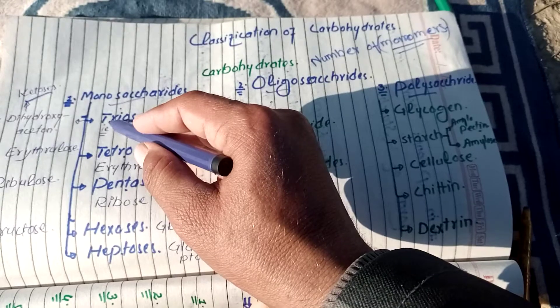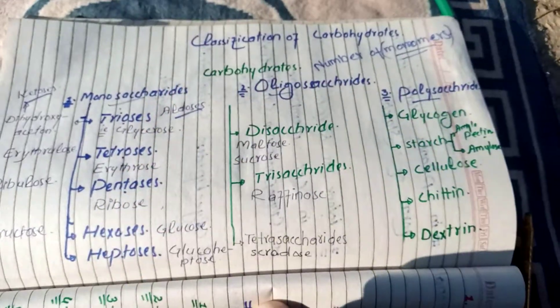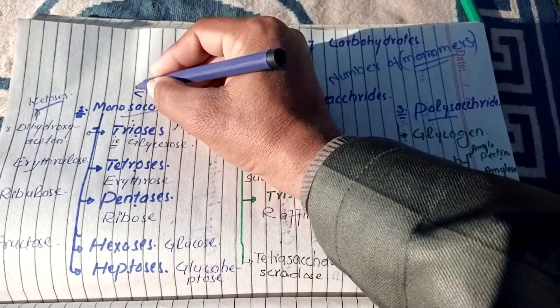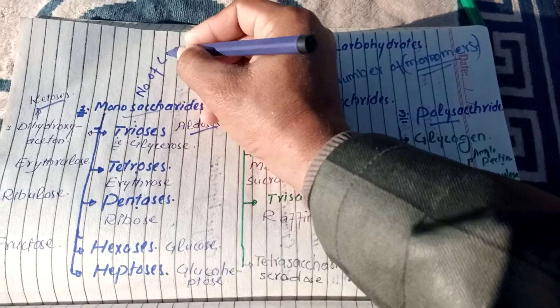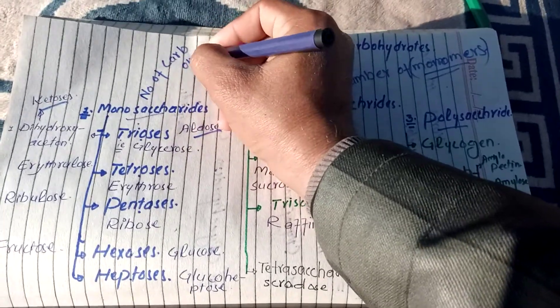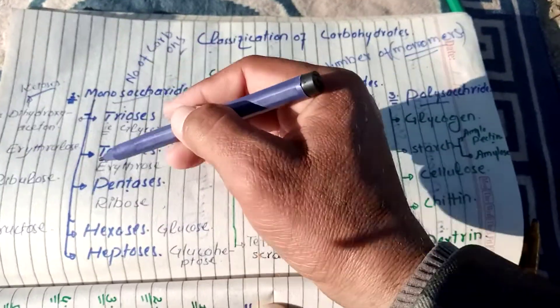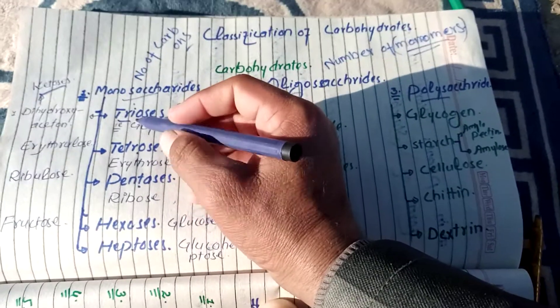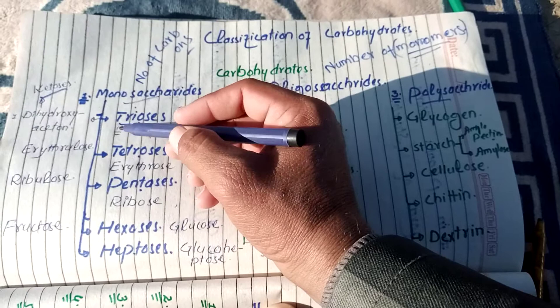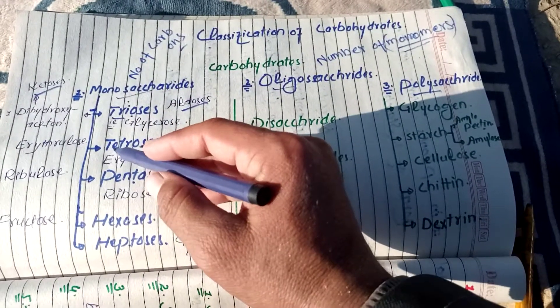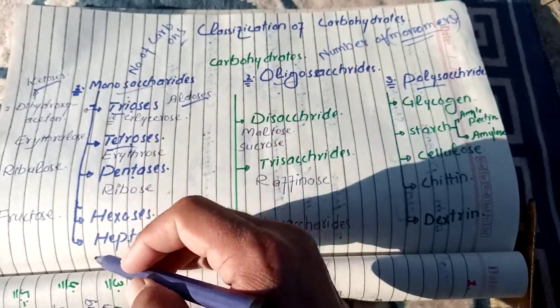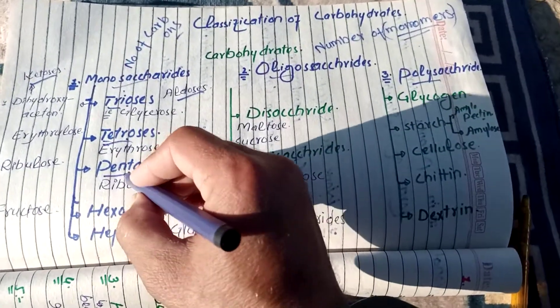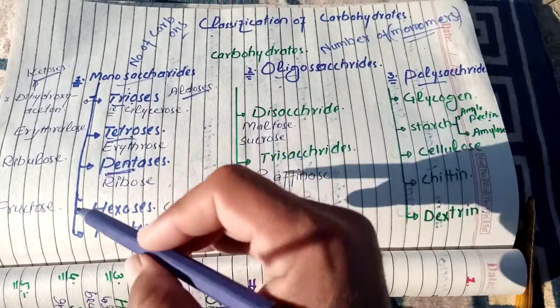Triose, yeh carbon ki numbering ke buniyad par monosaccharide further classify hui hai. On the basis of number of carbons ki tadaad par monosaccharide ki further classification kiya gaya hai. Triose, tri ka matlab hai 3. Aise compounds jis mein 3 carbon mojood ho. Number 2 tetrose aise monosaccharides jis mein 4 carbon mojood ho. Pentose jis mein 5 carbon mojood ho.